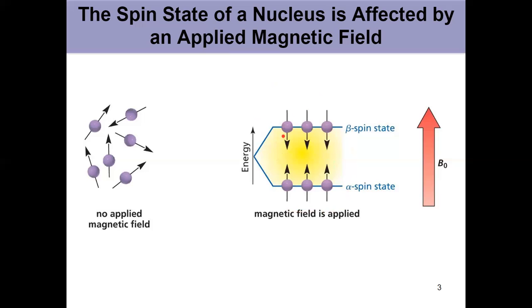This beta spin state is higher in energy because there's more energy that's needed to align directly opposite the applied magnetic field. But those are the only two possibilities. It's not going to be sideways. It's either with alpha or perfectly against beta. And the difference in the energy there depends on the strength of the applied magnetic field. The greater the strength, the larger the energy difference here.